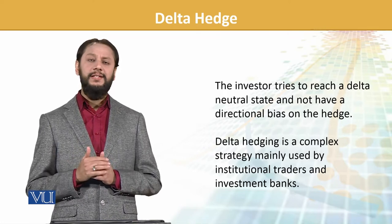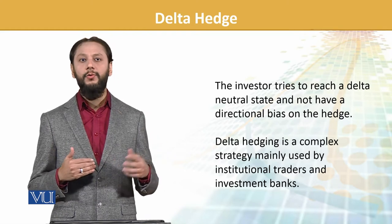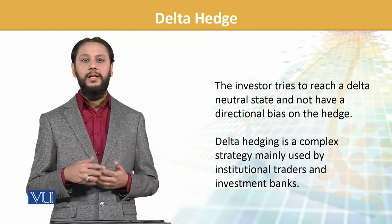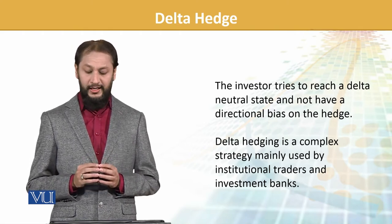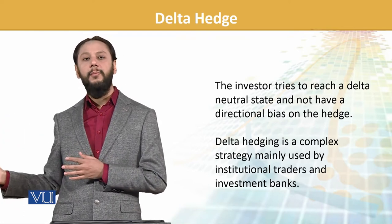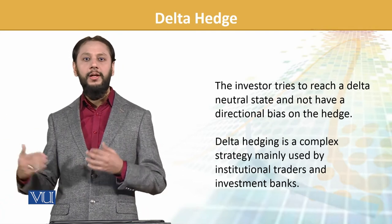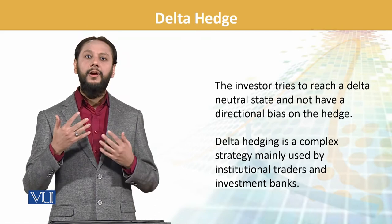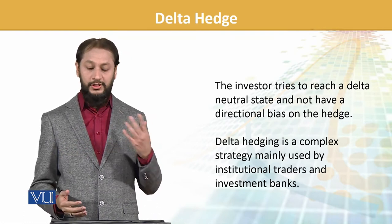The investor tries to reach a delta neutral state — meaning if the share price falls, the portfolio structure is such that losses are avoided. Option writers also look at how many underlying assets they need to hold on the back end to safeguard themselves. Delta hedging is a complex strategy mainly used by institutional traders and investment banks. For example, if a bank writes 500 options, it checks whether it needs 500 shares behind them or fewer — if delta is 1, maybe 500 are needed, otherwise less. This is a high-level strategy not commonly used by small retail investors.